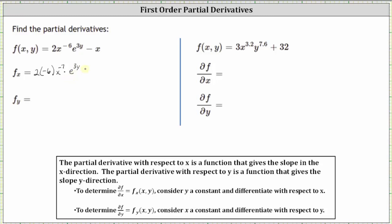Then we have minus the derivative of x with respect to x, which is one, giving us minus one. Simplifying, we have negative 12 x to the power of negative seven, times e to the power of 3y, minus one.